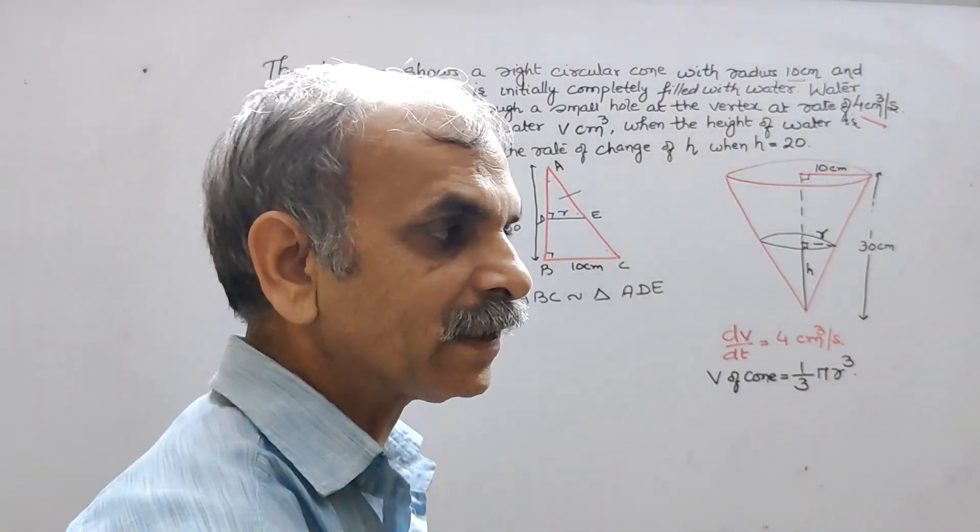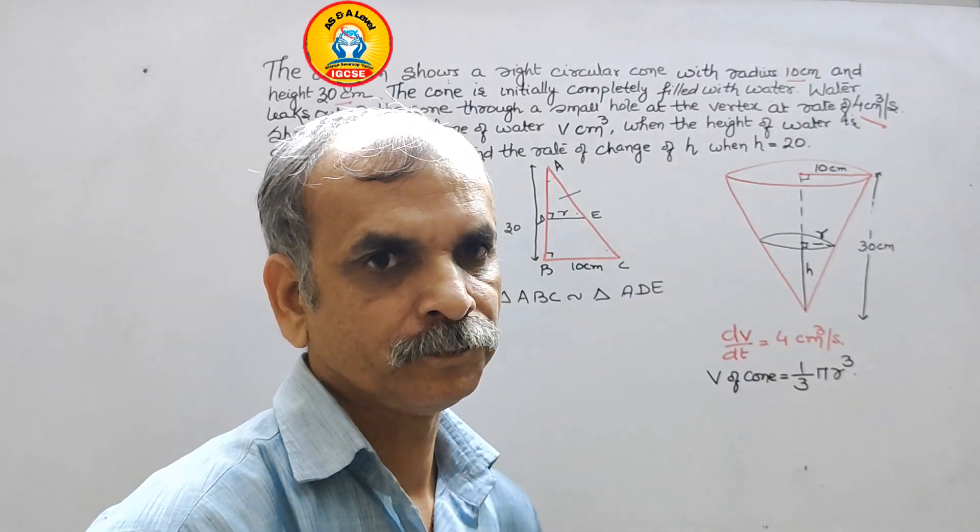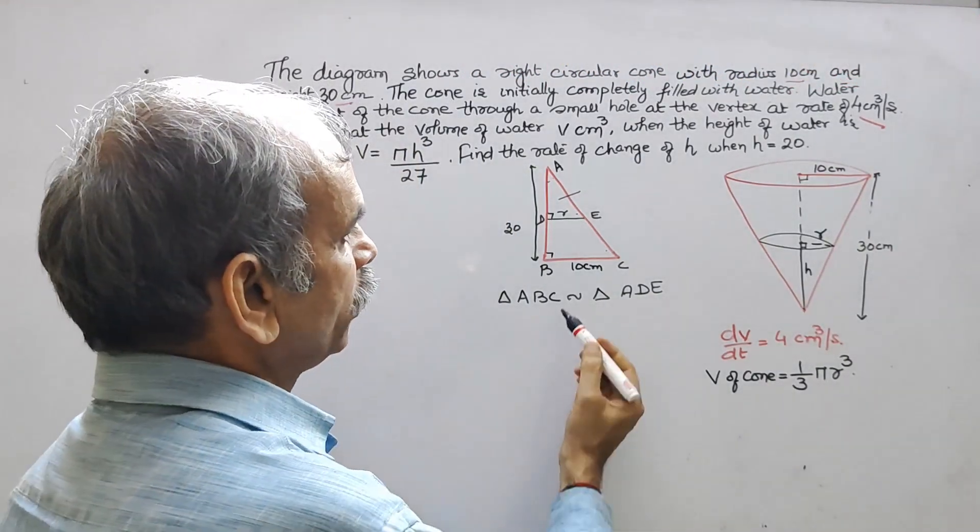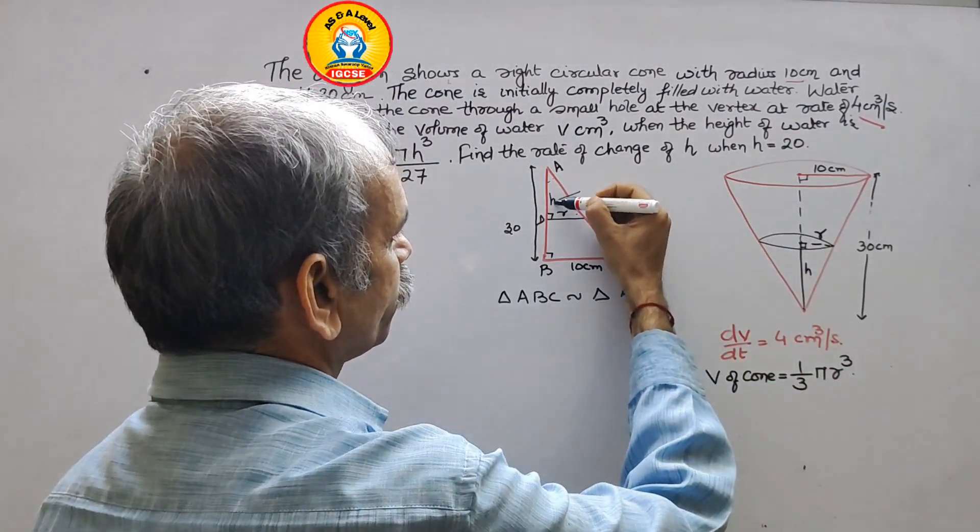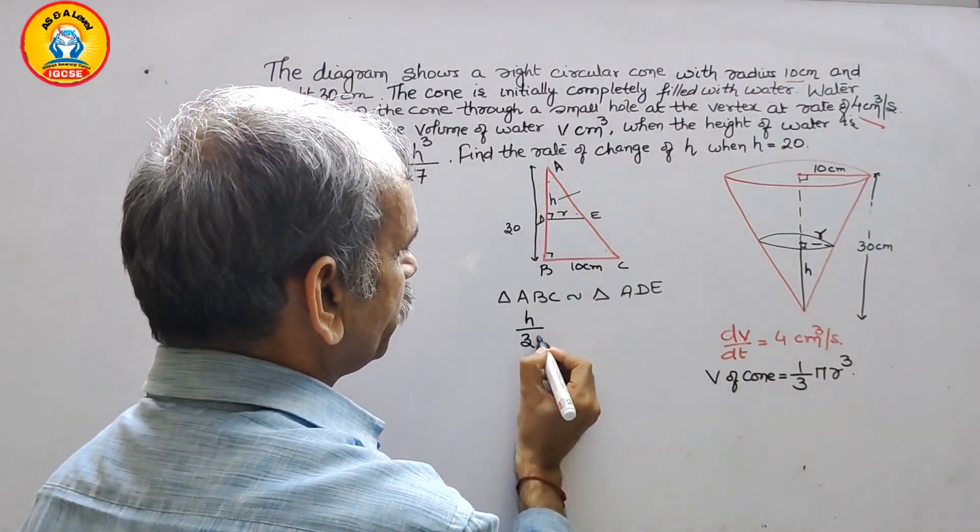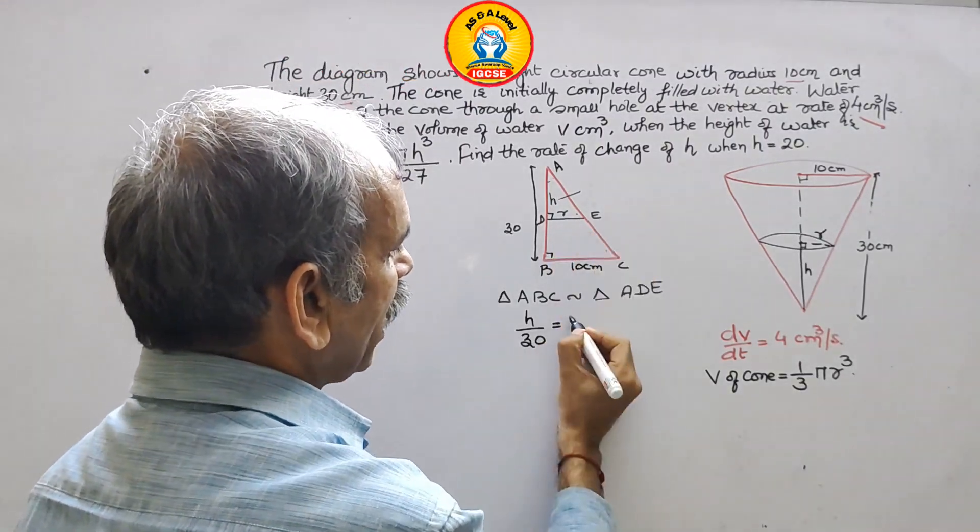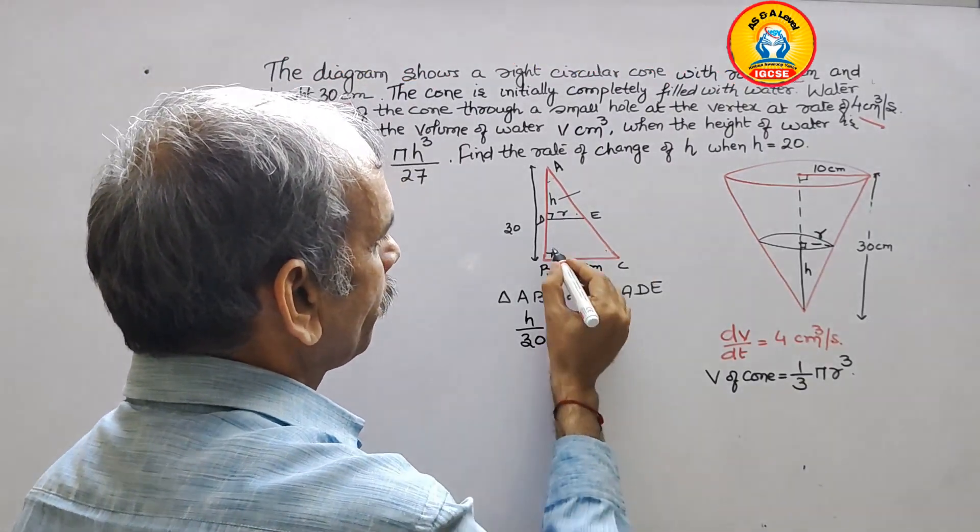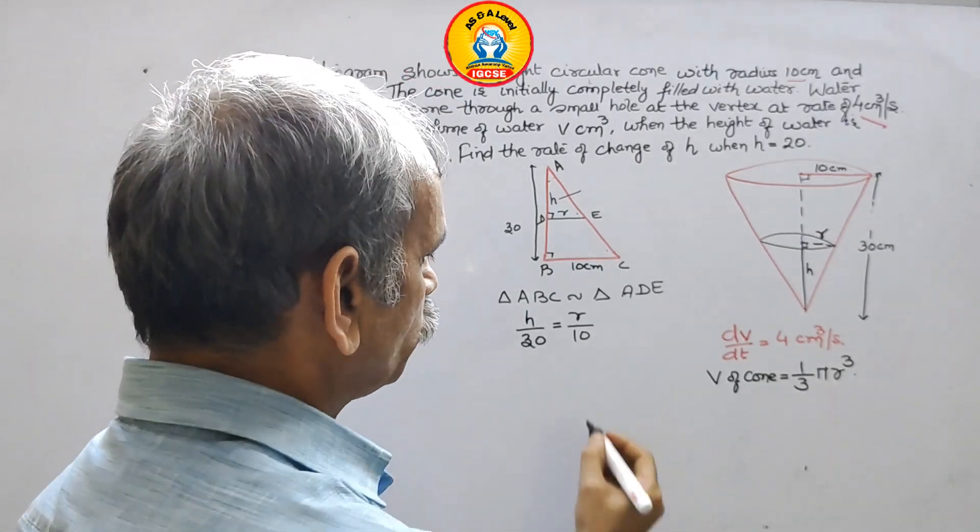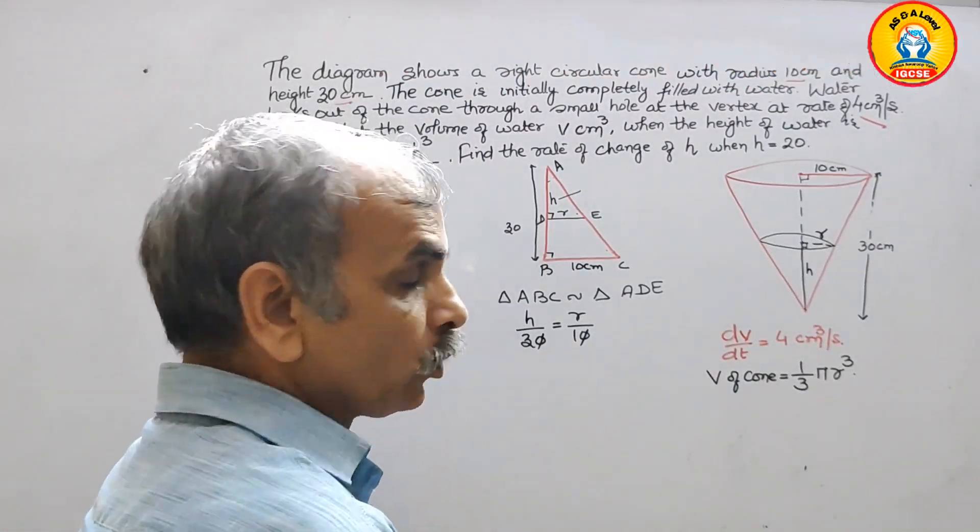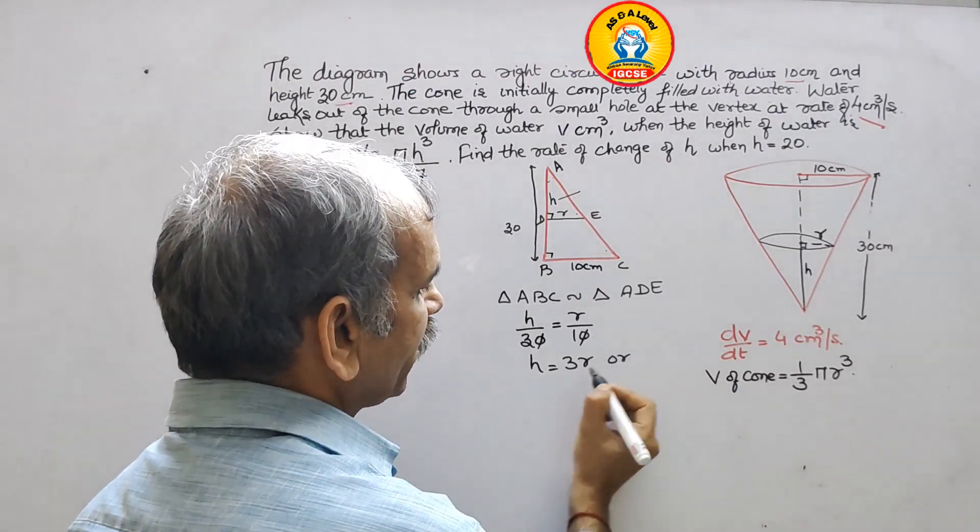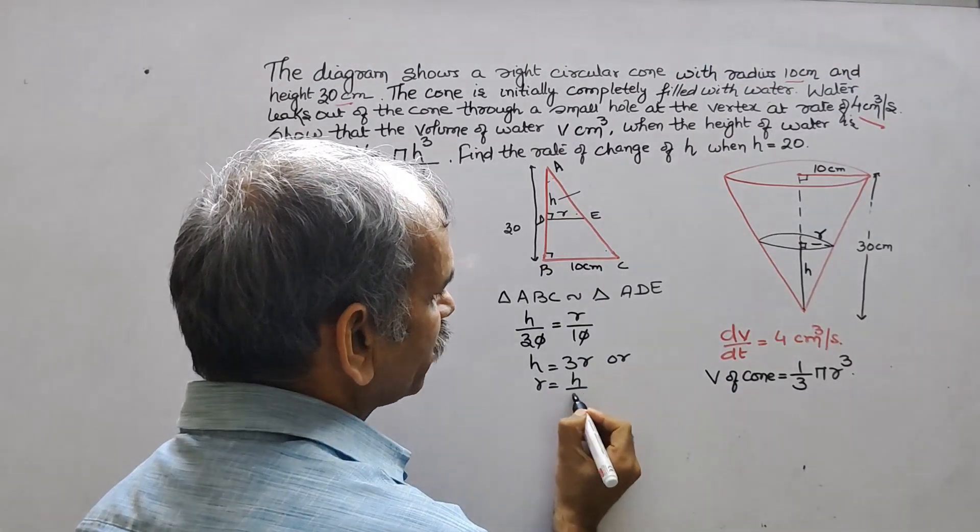If they are similar, then sides will go into proportion. So now just we will write that, and this they have given h. So now first comes your h/30, that is big one. Now small is r/10. Now go for cross multiplication or you can say this and this will go out. So now we can say h = 3r or we can say r = h/3.